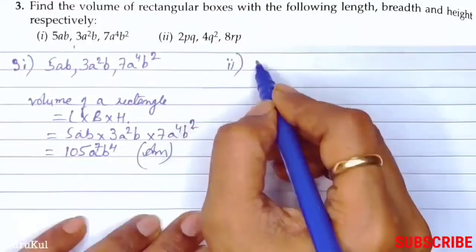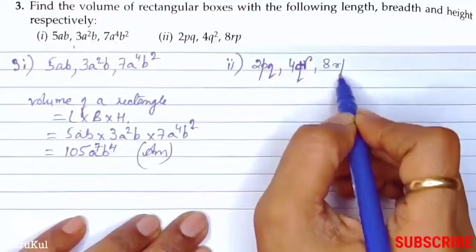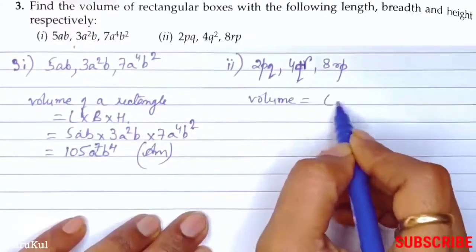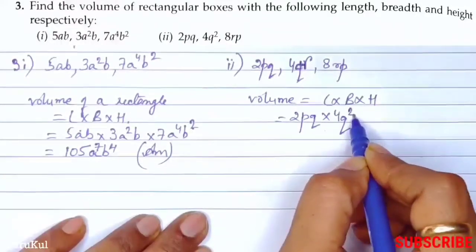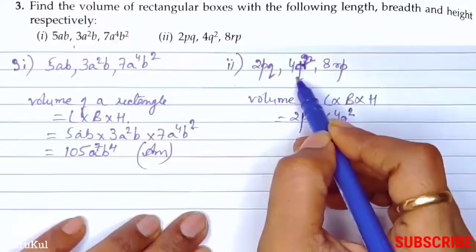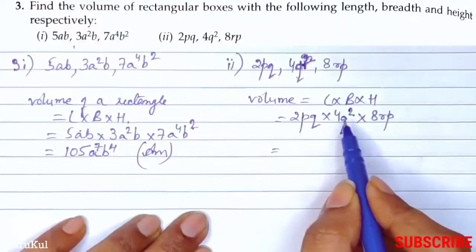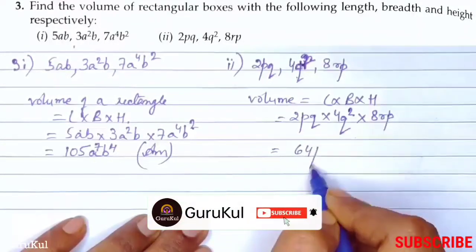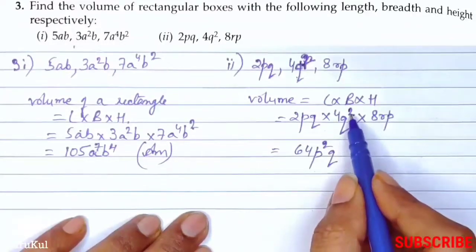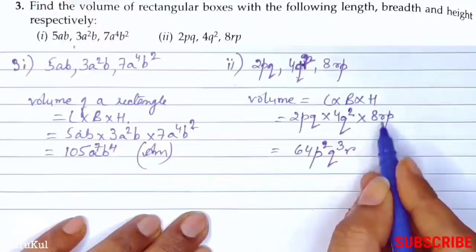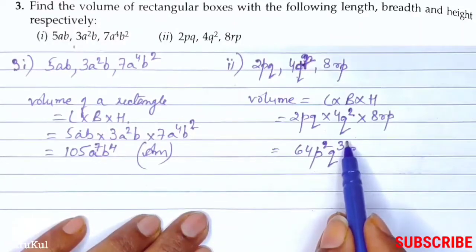Now the second part. It is 2pq, 4q square, and 8rp. So volume equals length into breadth into height. So 2pq into 4q square into 8rp. So 2 times 4 is 8, 8 times 8 is 64. p: p to the power 1 and 1, that gives us 2. Then comes q: q is 2 plus 1, that is 3. Then comes r: only r to the power 1. So the final answer is 64p squared, q to the power 3, r.